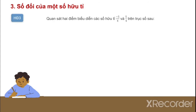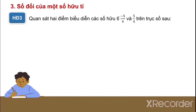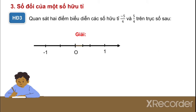Hoạt động 3: Quan sát 2 điểm biểu diễn các số hữu tỉ âm 5 phần 4 và 5 phần 4 trên trục số. Ta có 0, 1 và âm 1. Đầu tiên ta chia đoạn từ 0 đến 1 làm 4 phần bằng nhau, rồi lấy thêm một phần nữa, ta sẽ được kết quả là 5 phần 4. Đếm 1, 2, 3, 4 — đến đây là 1 — và lấy thêm một phần nữa được là 5 phần 4.